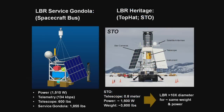You have to have power and pointing control. So even with LBR on top, you still have a service gondola hanging from the bottom providing power, communications, and computing. In our case the service gondola looks a lot like our STO gondola, which will fly again later this year from Willey Field in Antarctica. The gondola and pointing system for LBR is essentially a straight carryover of technology developed for STO, made by the Applied Physics Laboratory.